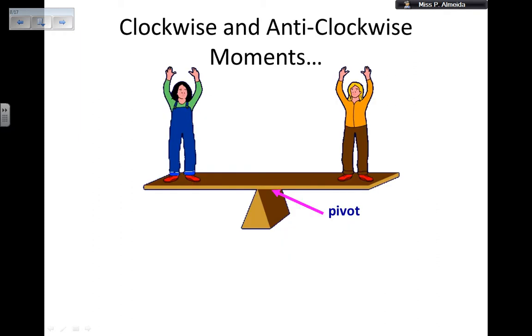Moments can be clockwise and anticlockwise because I can have a turning effect that goes in the same direction of the pointers on the clock, so clockwise, or I can have a moment that goes in the opposite direction of the pointers on the clock, which is anticlockwise.